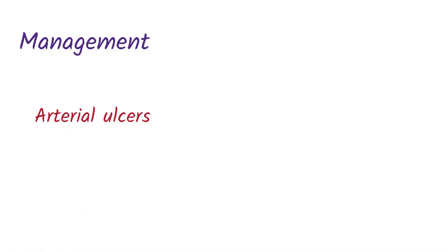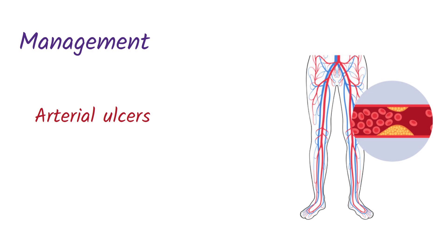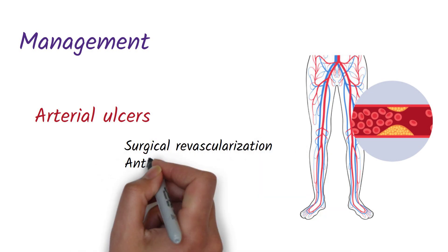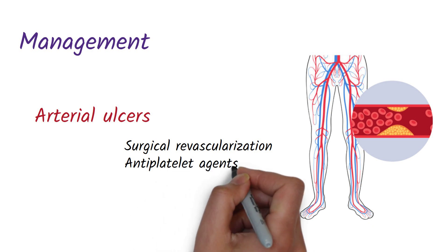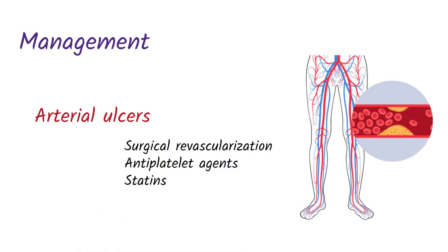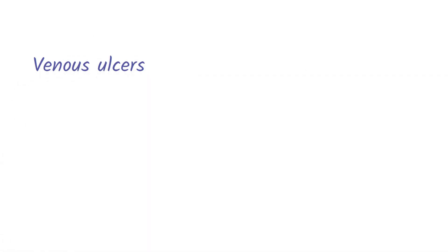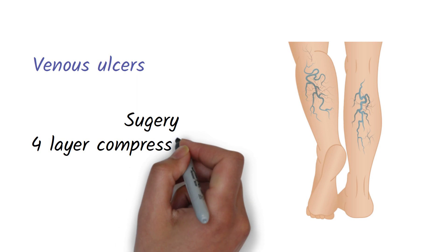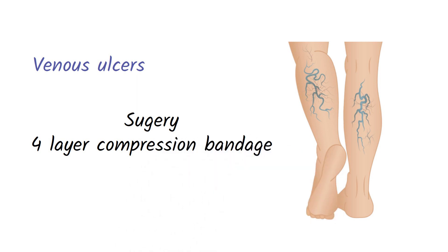Now let's talk about the management of leg ulcers. Arterial ulcer management is the same as for peripheral arterial disease. Surgical revascularization and pharmacotherapy with antiplatelet agents and statins will improve the blood supply and therefore heal the arterial ulcer. Management of venous ulcers includes surgery for varicose veins, or if the patient is not suitable for surgery, a four-layer compression bandage to drain blood from superficial veins to deep veins.